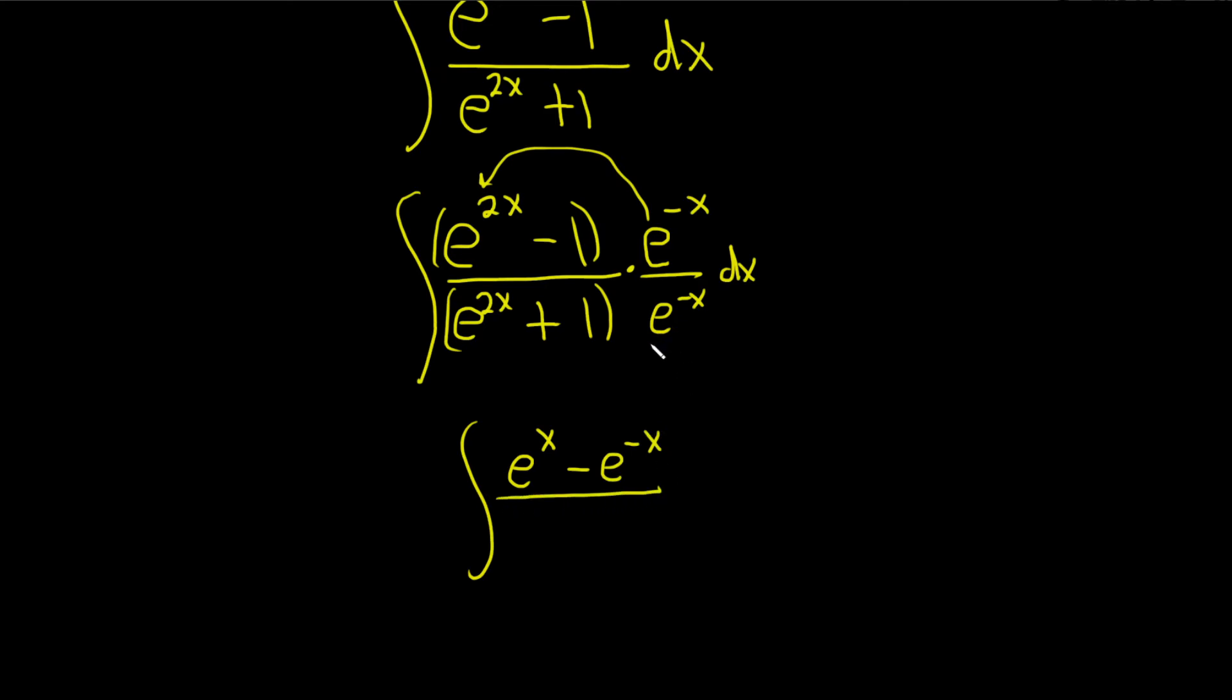In the denominator, same thing happens. We get e to the x plus e to the negative x. And here we have the dx.